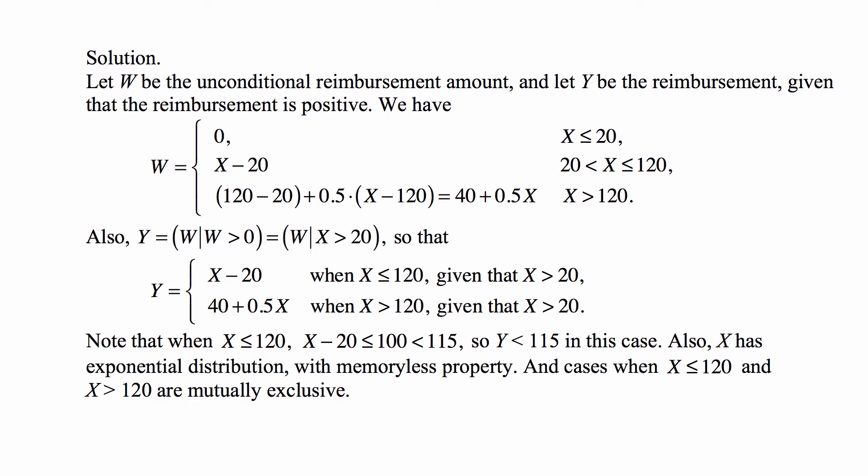This total can be rewritten as 100 plus half of x minus 120. Half of 120 is 60, so we're subtracting 100 minus 60, giving us 40 plus 0.5x for x greater than 120.